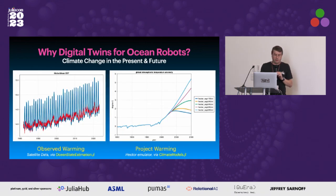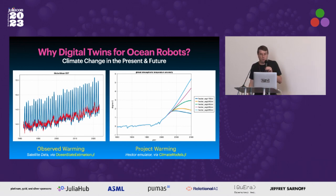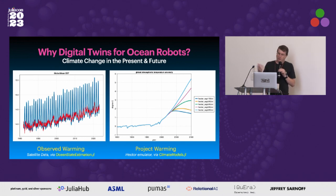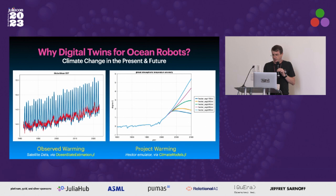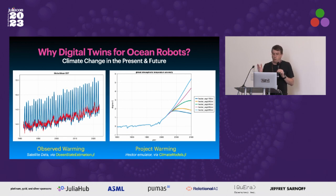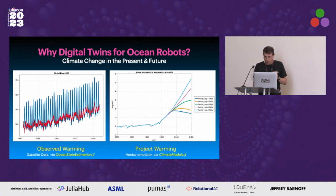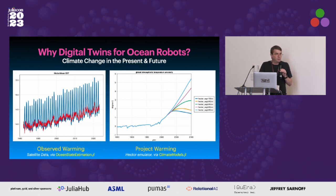Another piece of motivation is climate change. Looking at these two plots, you see on the left the way the climate has been warming — from satellite data. On the right is the projection into the future, on a much longer timescale. The urgency comes from the fact that we have a huge problem: the planet is burning up. We need to do the best job we can to monitor it and detect issues that propagate through the system.